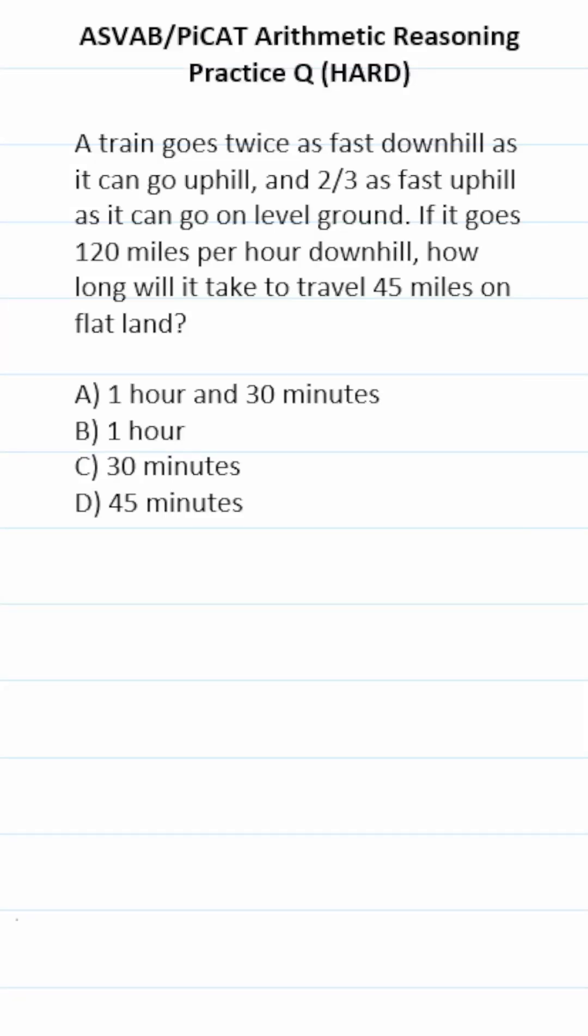This ASVAB PICAT Arithmetic Reasoning Practice Question says: A train goes twice as fast downhill as it can go uphill, and two-thirds as fast uphill as it can go on level ground. If it goes 120 miles per hour downhill, how long will it take to travel 45 miles on flat land?